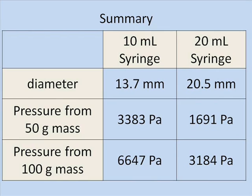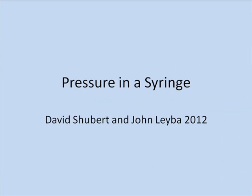In summary, the pressure generated in a syringe depends both on the force applied as well as the diameter of the syringe itself. For example, a 50 gram mass generated just under 3,400 pascals inside our 10 milliliter syringe, while a 100 gram mass generated just over 6,600 pascals in the same syringe. Also, a 100 gram mass acting on the 10 milliliter syringe created just over 6,600 pascals, while the same force generated only just under 3,200 pascals in the larger 20 milliliter syringe. You've now seen how a water barometer can be used to measure the pressure inside a syringe and that pressure depends on both the applied force and the syringe diameter.